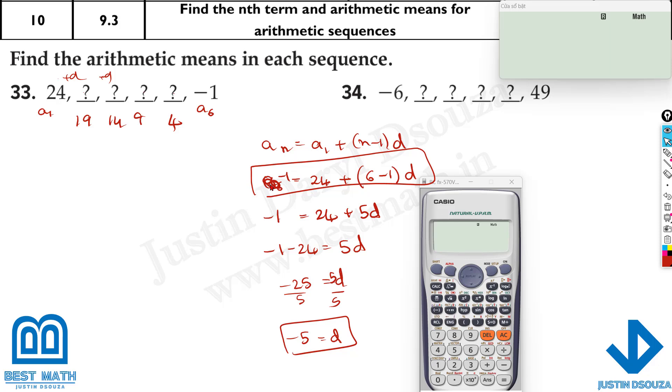Let me show you in the calculator. Minus 1 equals 24 plus n minus 1. That is 6 minus 1. Close the bracket. And d value is unknown. I'll take it as x. Shift and solve. And then equal to, it's minus 5.